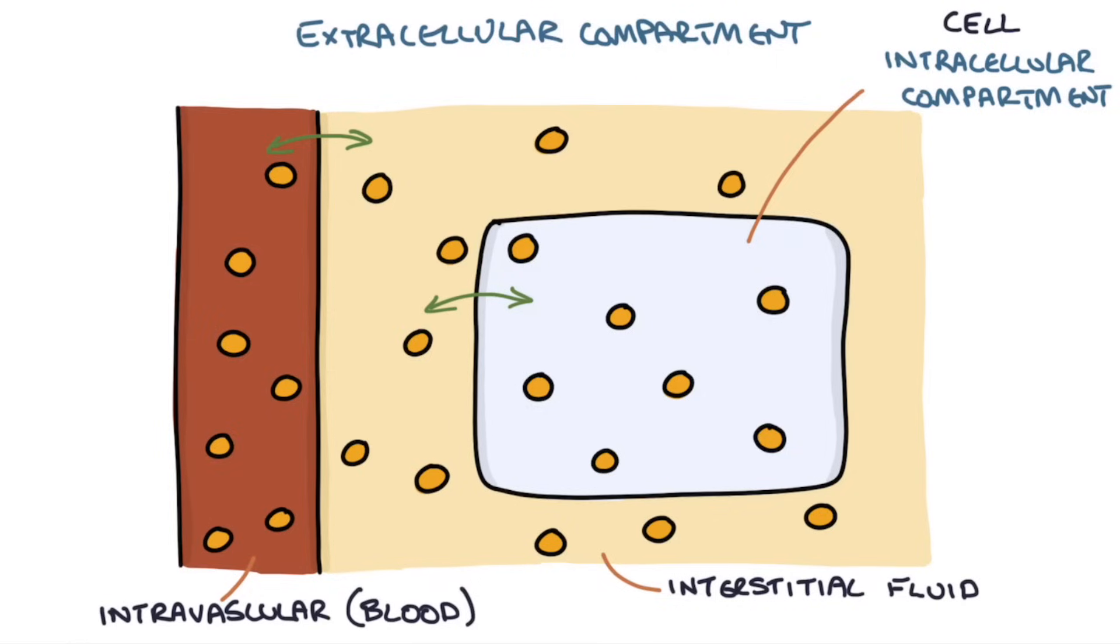Therefore, we know that if we measure the osmolarity of blood plasma, this is going to be roughly equal to the osmolality of the cells.